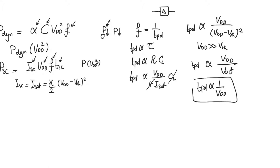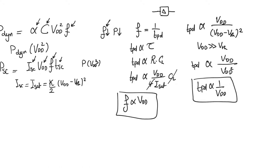In which case, we can simplify this into V_DD over V_DD squared, which means that T_PD is inversely proportional to V_DD. This is a very important conclusion: the operating frequency of the circuit is directly proportional to the supply used, or equivalently, the propagation delay is inversely proportional to the supply. So if we increase the value of power supply, we can operate the circuit faster. Increasing power supply reduces delay because it increases the amount of current available faster than it increases the amount of voltage switching that we need to do.